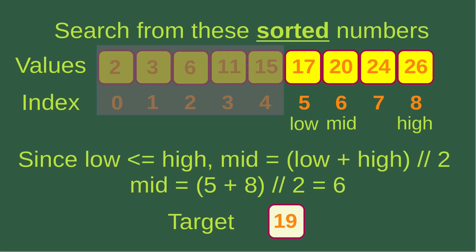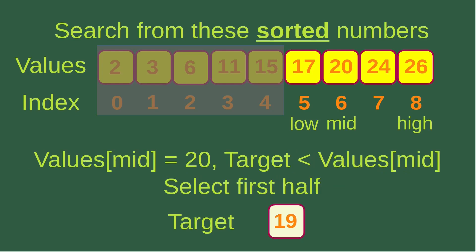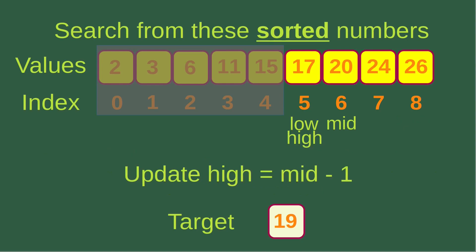Now we handle the right-hand part and ignore the left-hand part. Since low is smaller than or equal to high, we find the mid-index as low plus high divided by two using integer division. Mid equals eight plus five divided by two, which gives six. The value corresponding to mid-index is 20, but the target is 19. So the target is smaller than the value at mid-index. In this case, we take the first half of the remaining array and update the high index to mid minus one. Mid is six, so six minus one is five. Now both low and high are at index number five.